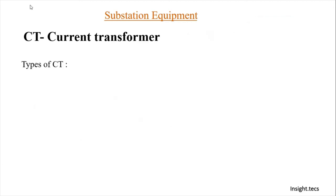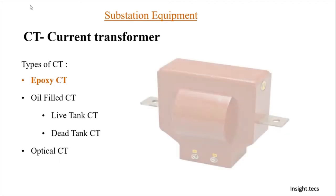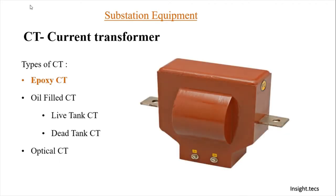Various types of current transformers. The first one is the epoxy CT, then we have oil filled CT, which can be further categorized as live tank CT and dead tank CT, and finally the optical CT. Let's understand what is epoxy CT. This type is generally used for 11 kV and below, and this type of CT is normally used where we have indoor bus.